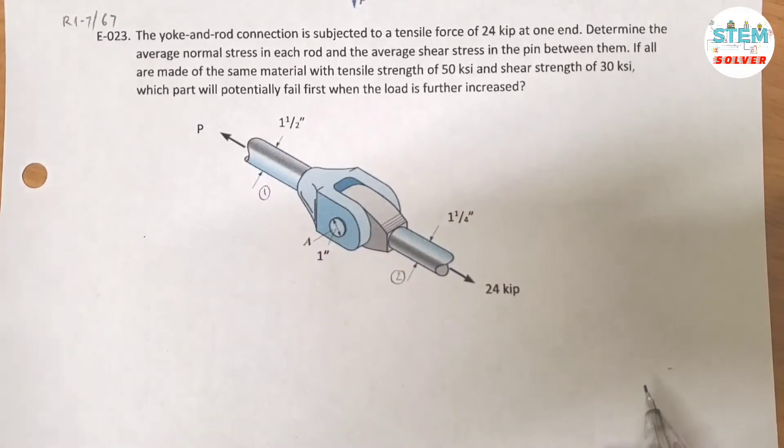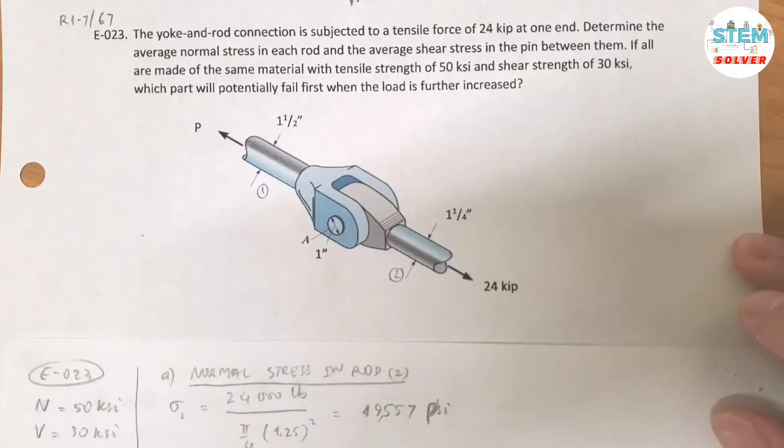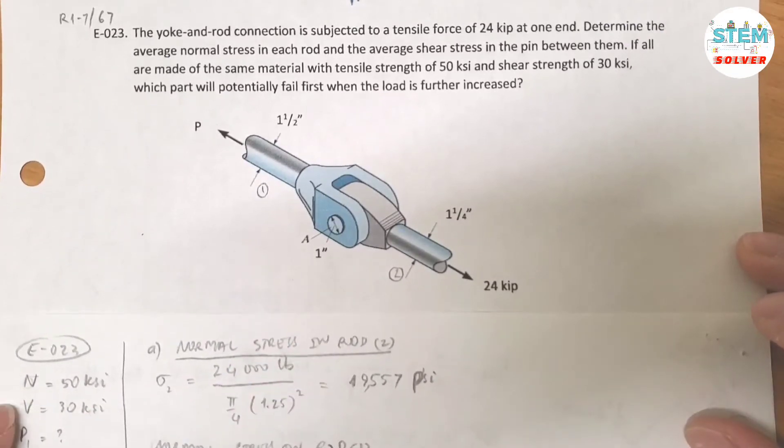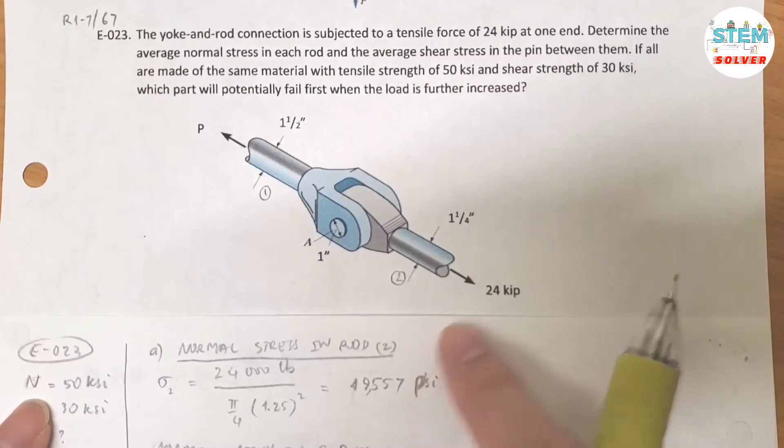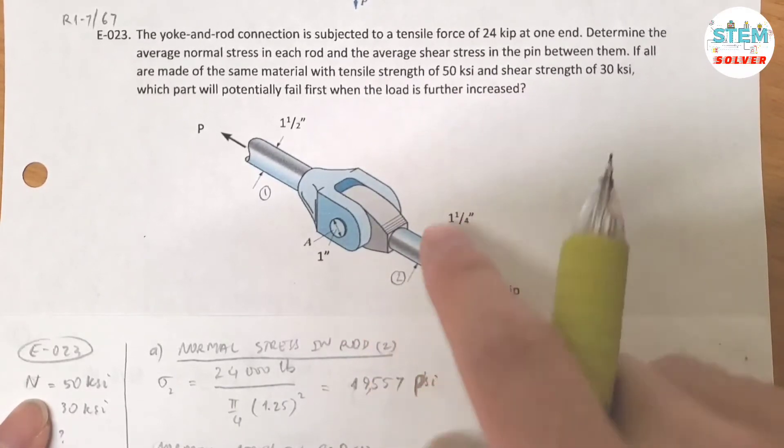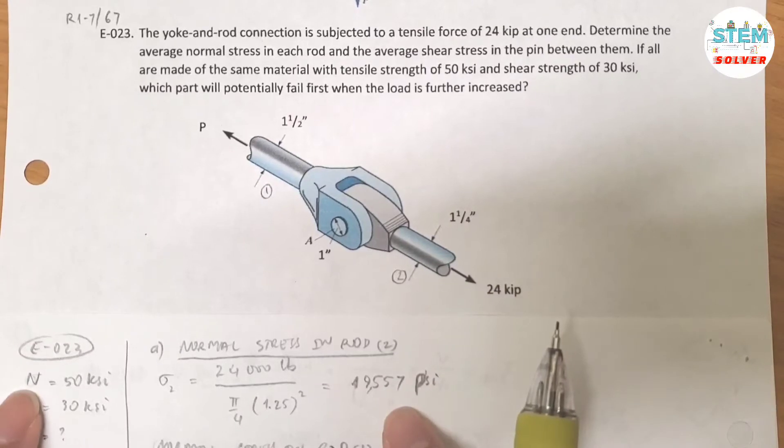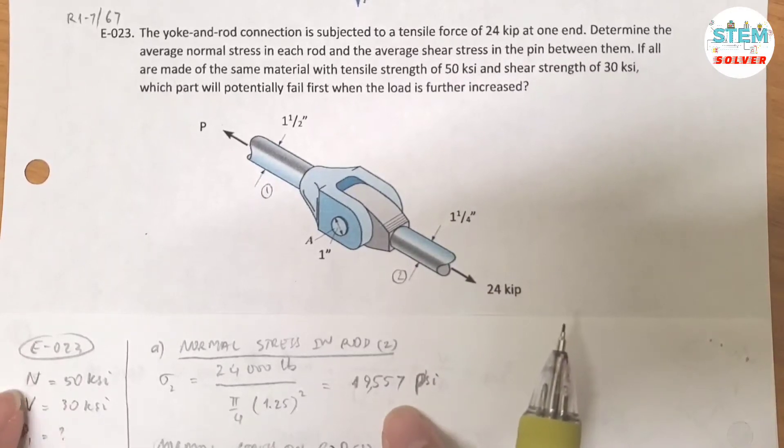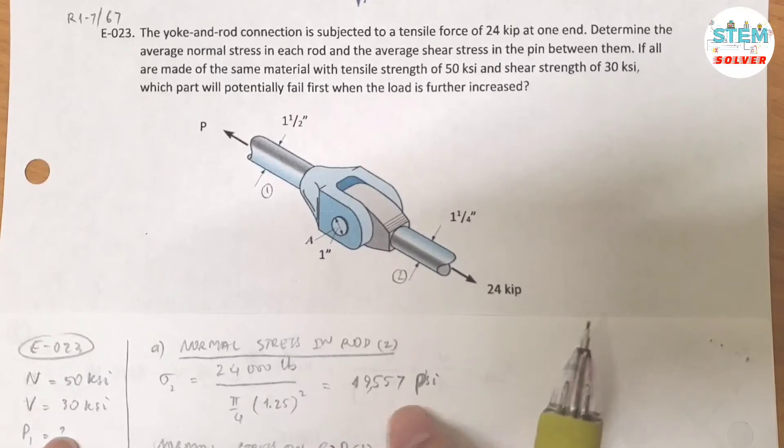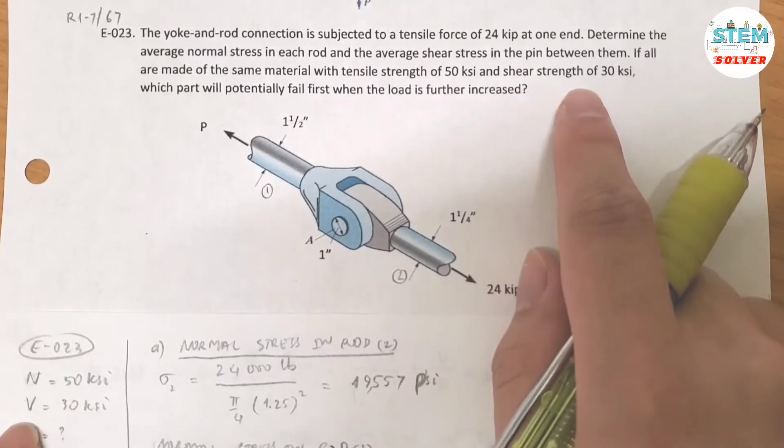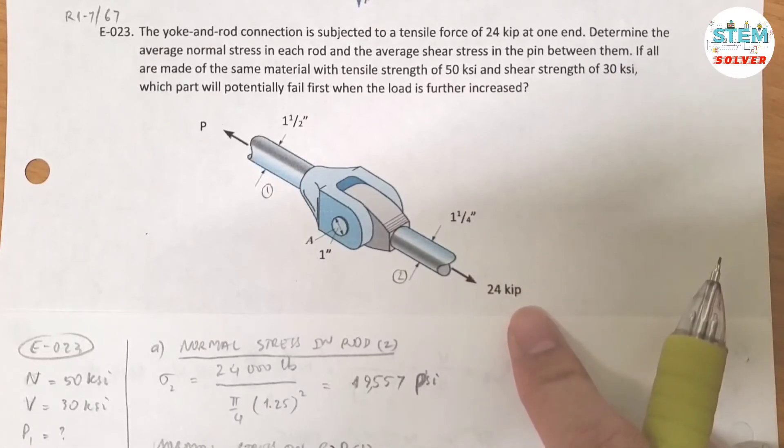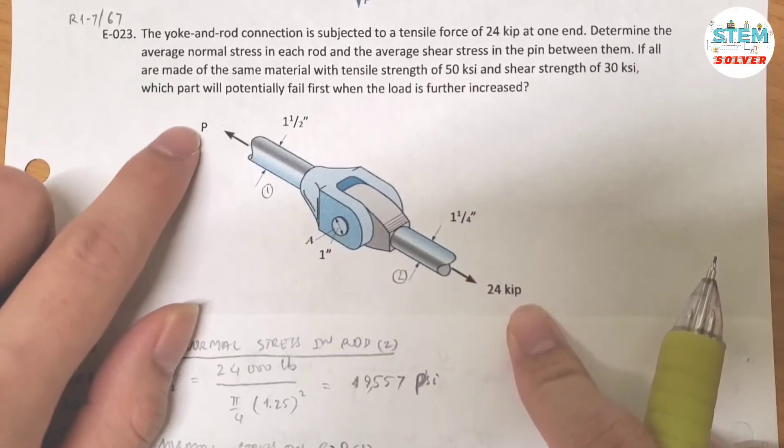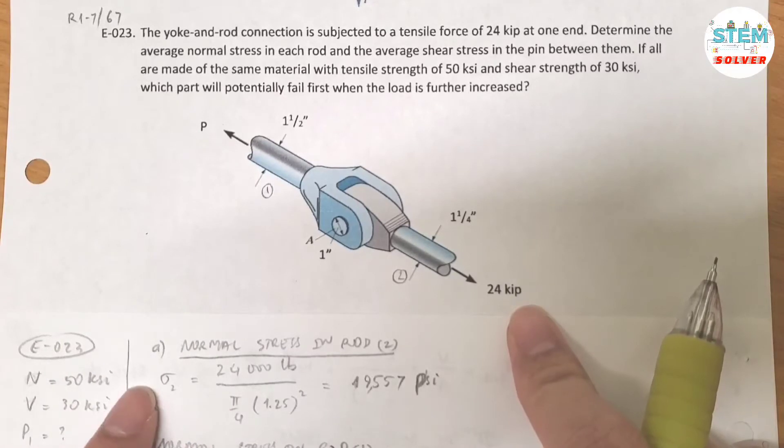So here is what we have: the tensile strength of 50 ksi, and you can call it whatever letter you like but I like to leave it at n to represent normal force. Okay, shear strength v as 30 ksi. You're given P2 which is 24 kip, and you have to find P1.